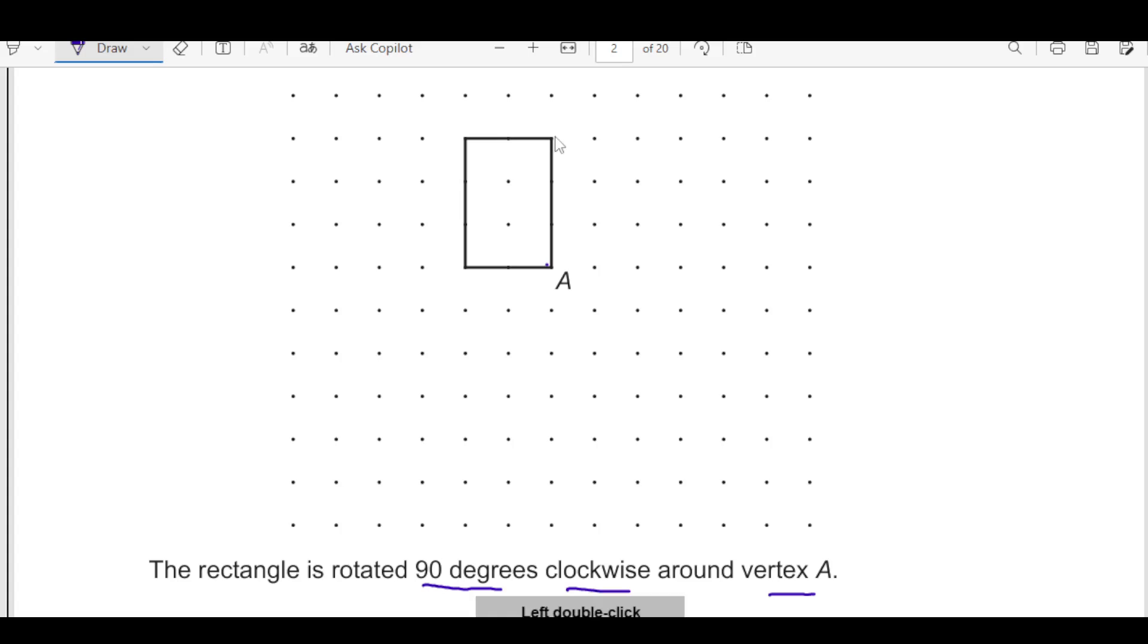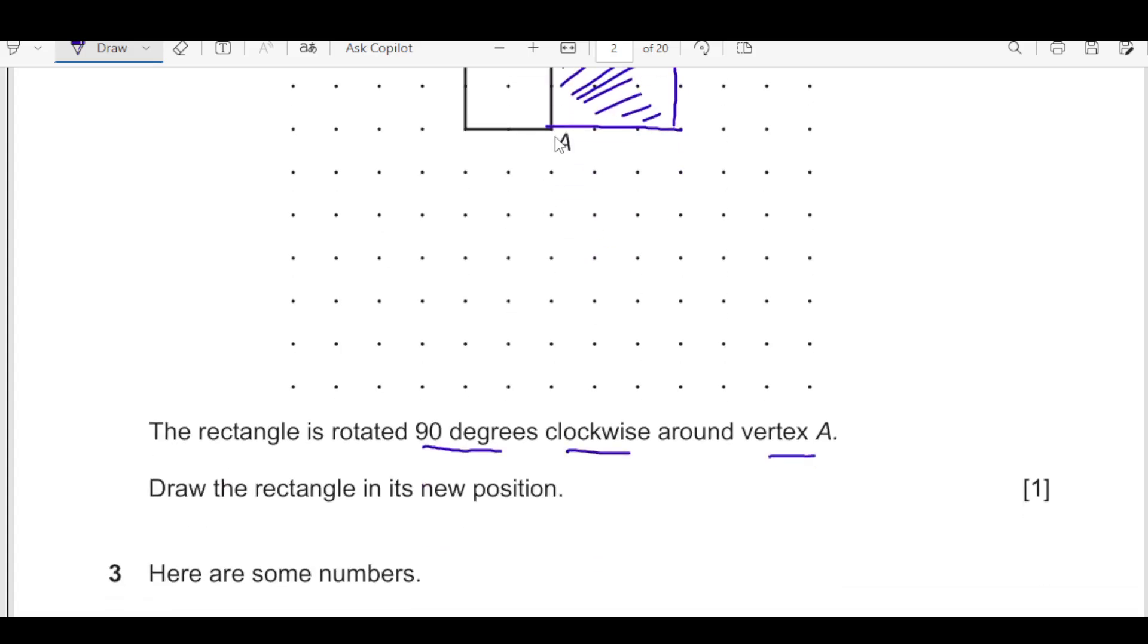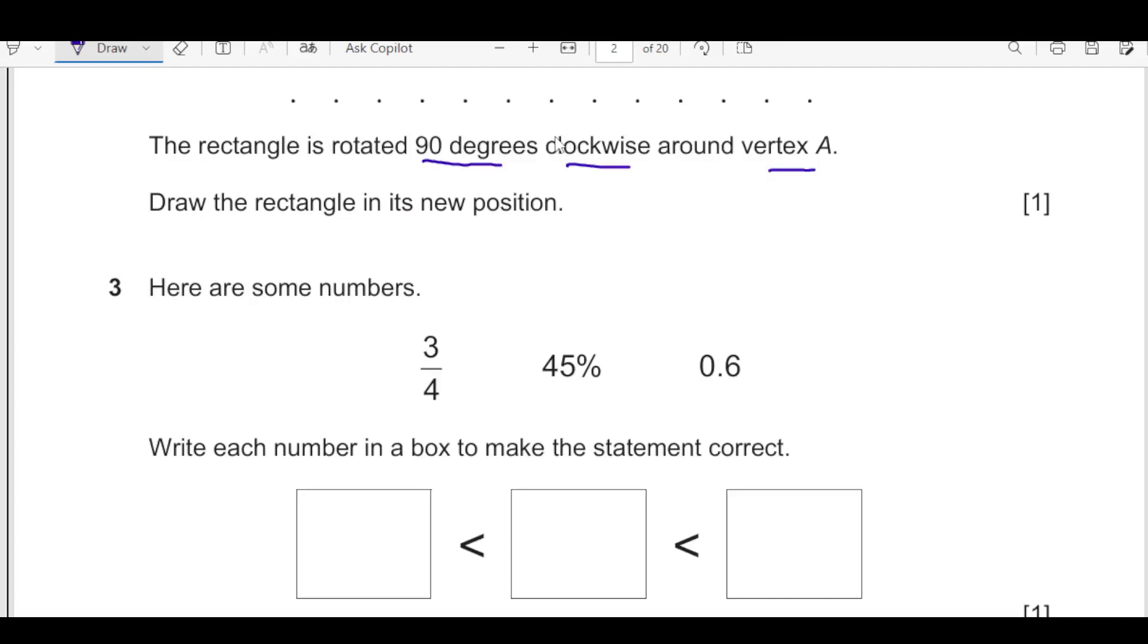Once you see this thing will come down here as we are rotating from here. Then this is going to like you see we have here 1, 2 and 3 dots. So 1, 2 and 3 it will come up to here. So the new shape is going to come over here like this. So this is our new shape after the rotation of 90 degrees clockwise.